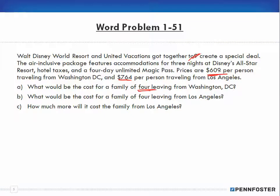$609 per person traveling from Washington D.C., and for four people, so that's $609 times 4 equals $2436. That's how much the cost would be for four people going from Washington D.C.